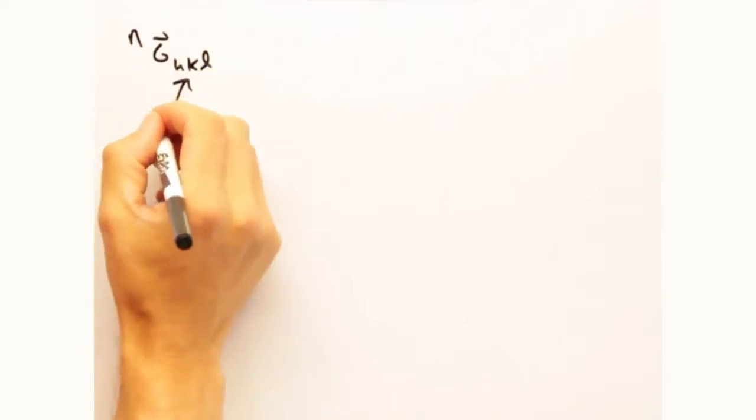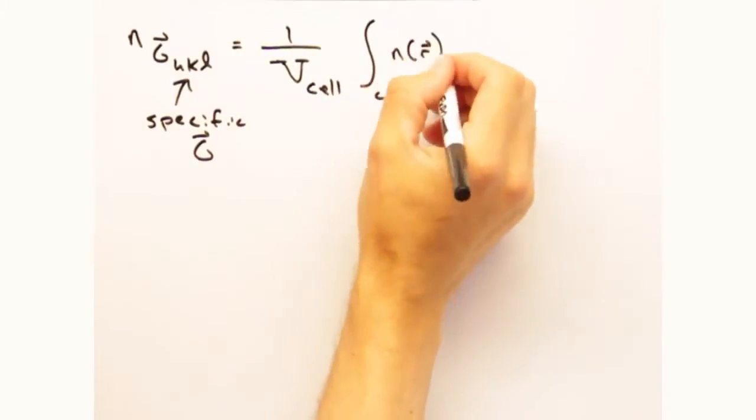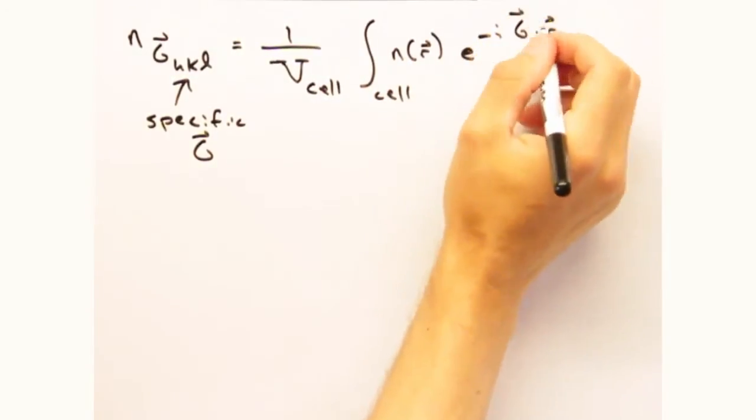So to get to intensity, we first have to solve for our Fourier coefficients. Because we built n(r) as a Fourier series, we can solve for the Fourier coefficients n_g by taking the inverse transform.